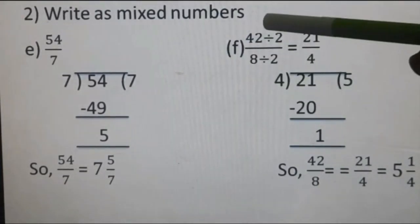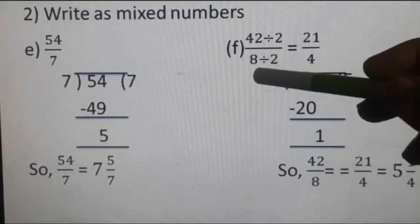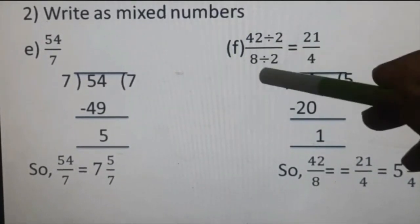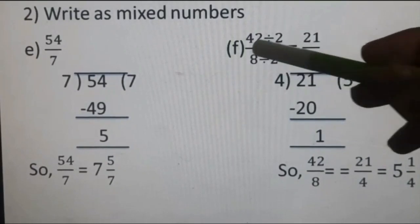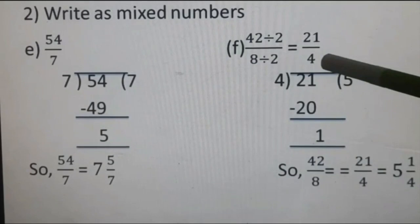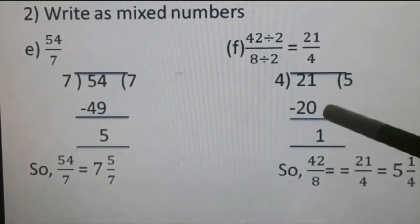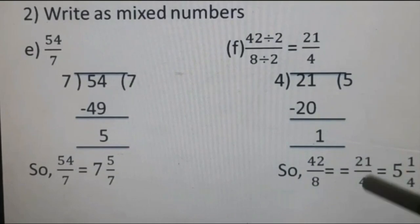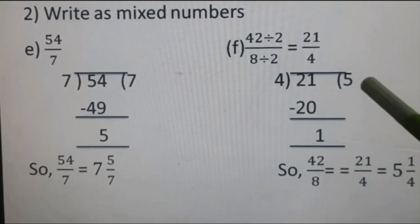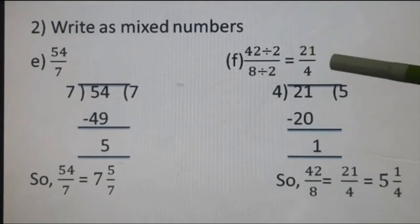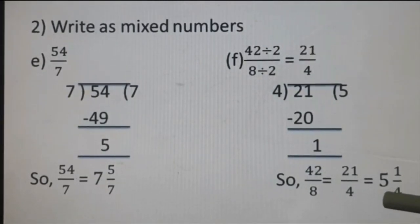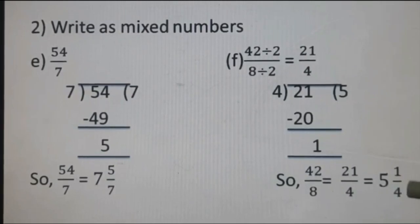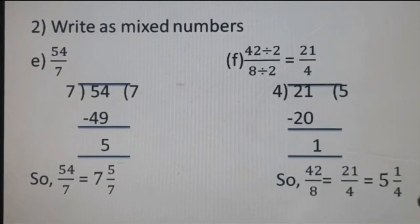Part F: 42 upon 8. Since 42 and 8 are both divisible by 2, first simplify: 42 divided by 2 = 21, 8 divided by 2 = 4, giving 21 upon 4. Then 21 divided by 4 — 4 fives are 20, remainder 1 — so 42 upon 8 = 5 whole 1 upon 4. Alternatively, you get 5 whole 2 upon 8, then simplify the fraction part to 1 upon 4; the answer is the same.